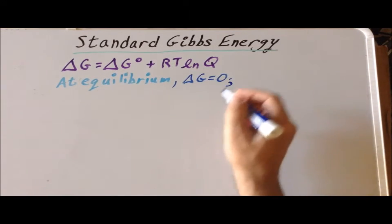Now, at equilibrium, we know two important things. The first is that delta G is equal to zero. The second important fact is that the reaction quotient, Q, becomes the equilibrium constant, K.